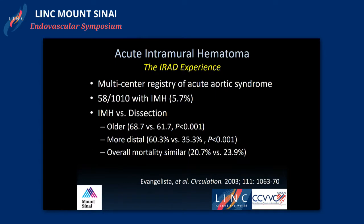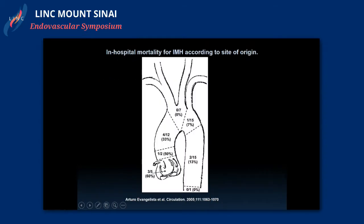One of the biggest datasets we have is from the IRAD experience — the multi-center registry of acute aortic syndromes. They looked at 1,010 patients and 58 had intramural hematomas, 5.7 percent. Compared to dissection patients, these patients were older — 68.7 years on average versus 61 — had more distal pathology, as most dissections present in the ascending aorta while more intramural hematomas occur in the descending aorta, though overall mortality was similar. Patients with ascending aortic pathology had higher in-hospital mortality: 60, 50, and 33 percent versus 7 and 13 percent for descending pathology.